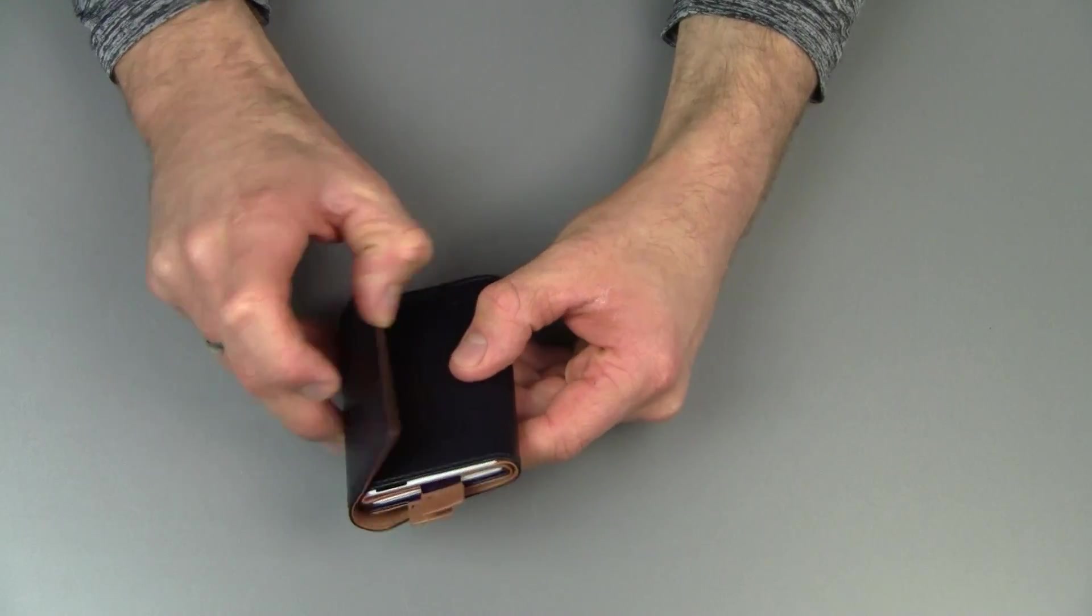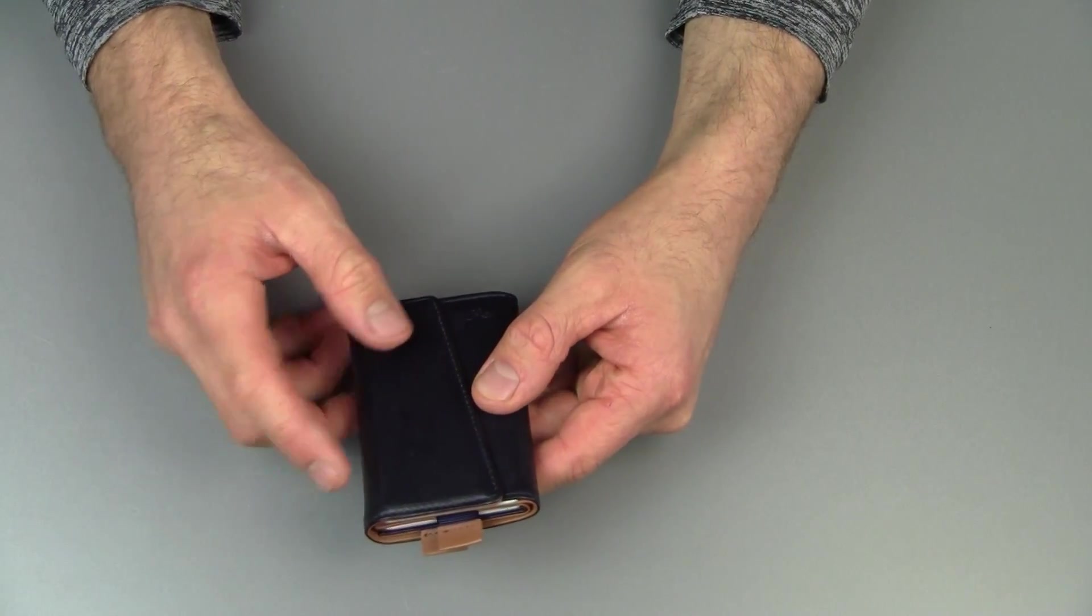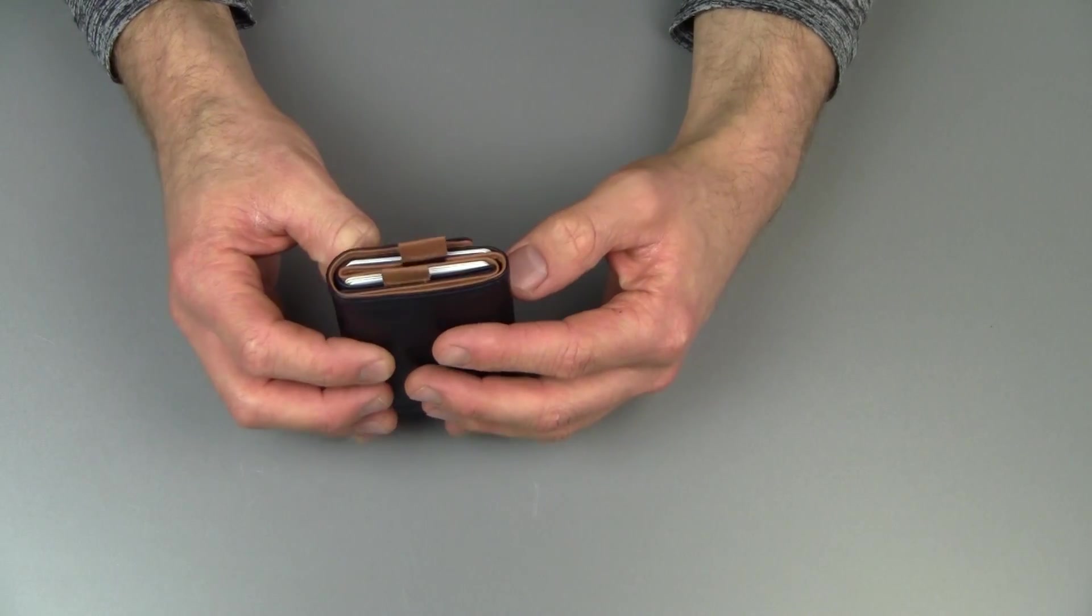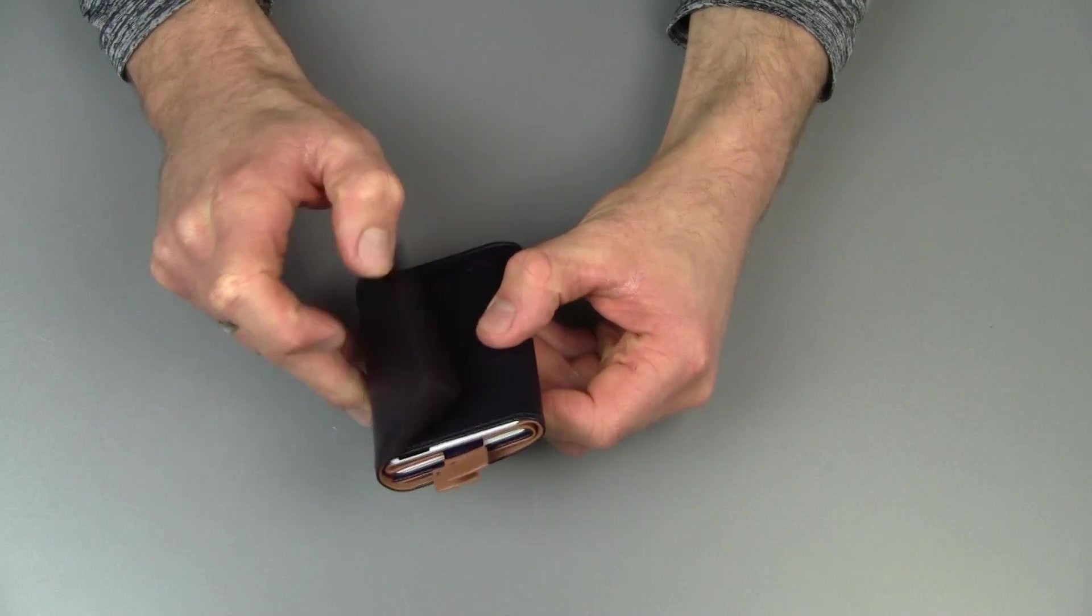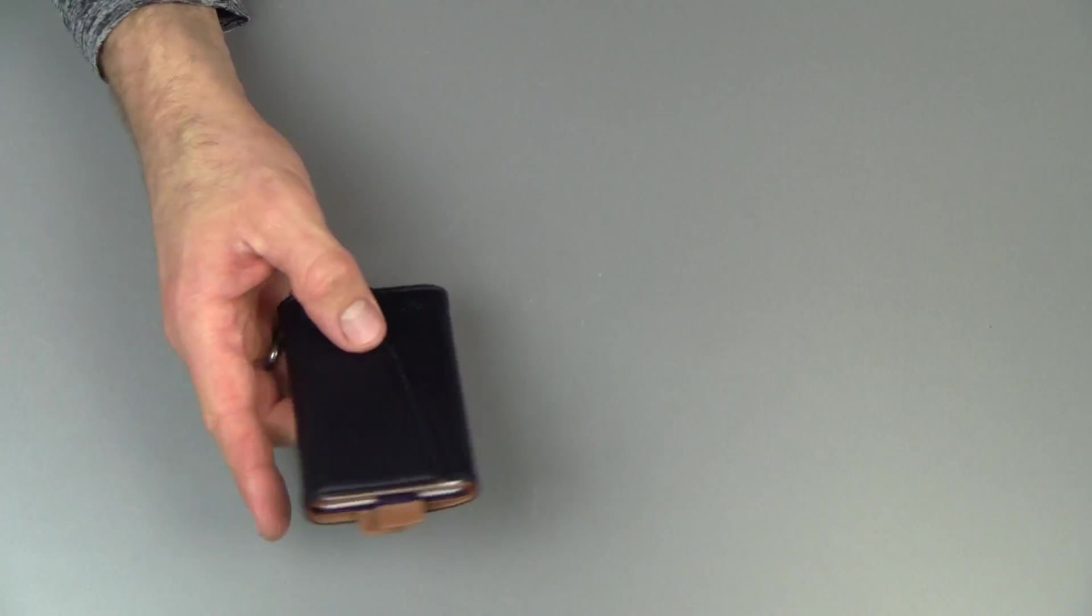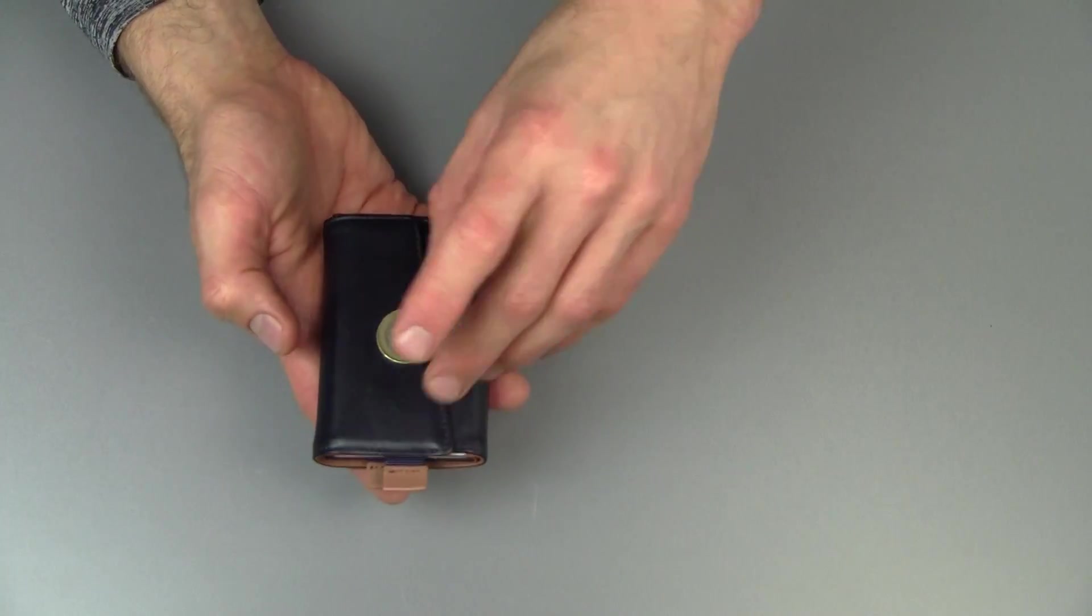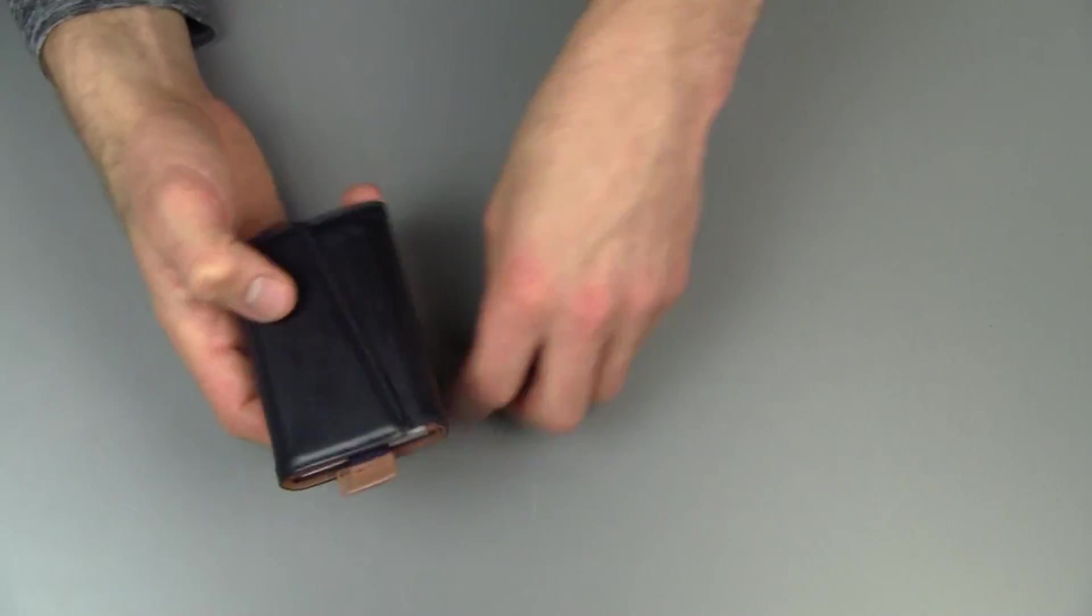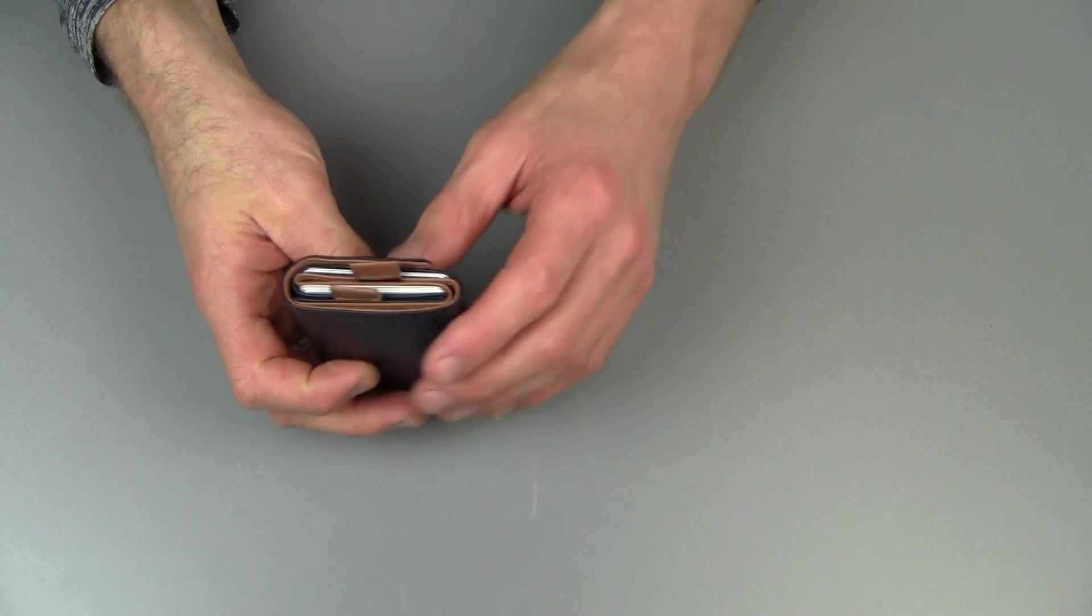They do warn that the magnetic strip in here for the closing could potentially harm your cards. I suppose theoretically speaking that is possible. But the magnet is so weak. You know nothing is really gonna happen there. You can see that even put money on there. It doesn't really stick to it anyway. So the magnet is not that strong that it's actually gonna destroy your cards.